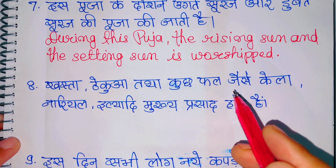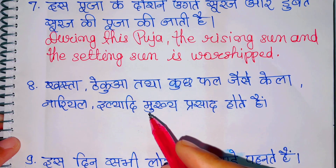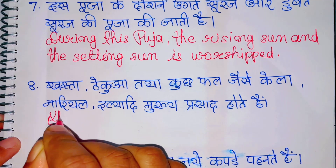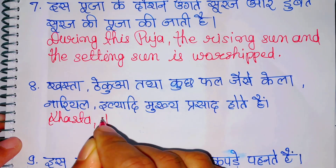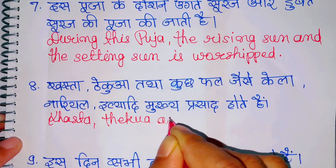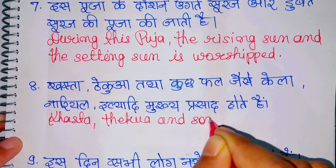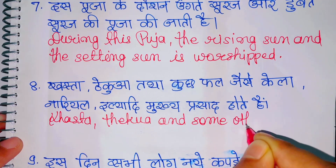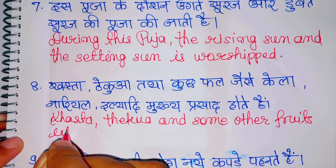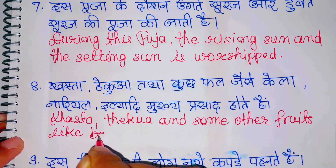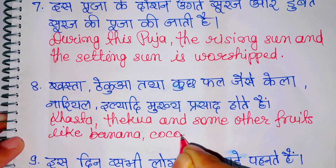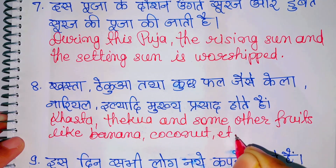खस्ता, ठेकवा तथा कुछ फल जैसे केला, नारियल इत्यादि मुख्य प्रसाद होते हैं। Khasta, Thekwa and some other fruits like banana, coconut etcetera are the main prasad.